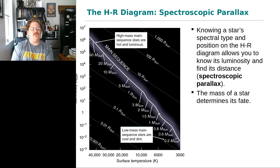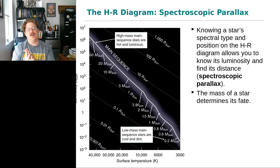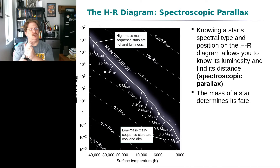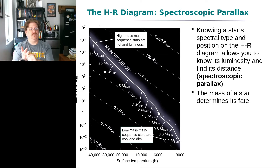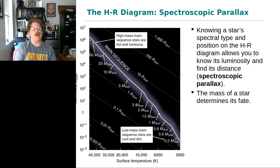The next rung on the cosmic distance ladder is spectroscopic parallax. Using the HR diagram, we can determine the intrinsic luminosity of a star based on its spectral type. Combined with the star's apparent brightness, we can then calculate its distance. This is known as spectroscopic parallax.